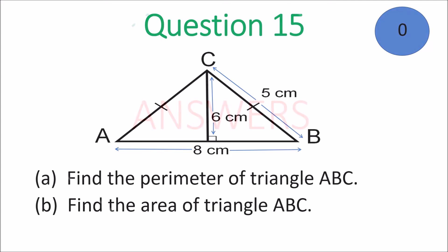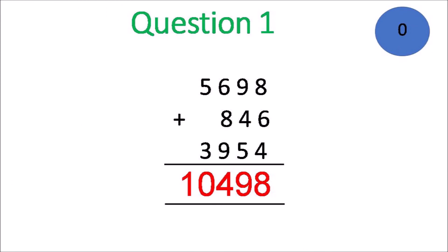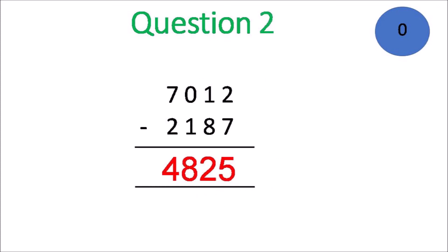And here we go with the answers. Question 1: 10,498 — when you add, you had to regroup. Question 2, subtraction: you get 4,825. You had to rename.